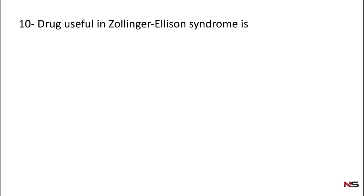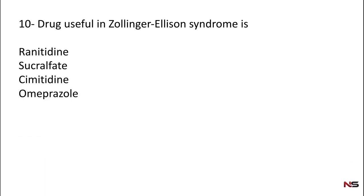Question 10: Drug useful in Zollinger-Ellison syndrome is? Options: Ranitidine, Sucralfate, Cimetidine, Omeprazole. The correct answer is Omeprazole — omeprazole is used in Zollinger-Ellison syndrome. Please add up your total marks and mention them in the comment section below.